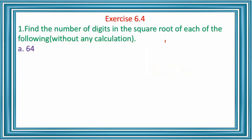Find the number of digits in the square root of each of the following without any calculation. The number of digits in the square root of an even number is n/2, and for an odd number it is (n+1)/2, where n is the number of digits in the perfect square number. So: (n+1)/2 when n is odd, and n/2 when n is even. Here, 64 is the number.